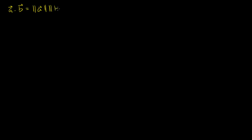We've known for several videos now that the dot product of two non-zero vectors a and b is equal to the length of vector a times the length of vector b times the cosine of the angle between them. With the angle between them — if that's my vector a and that's my vector b, the angle between them is this angle.